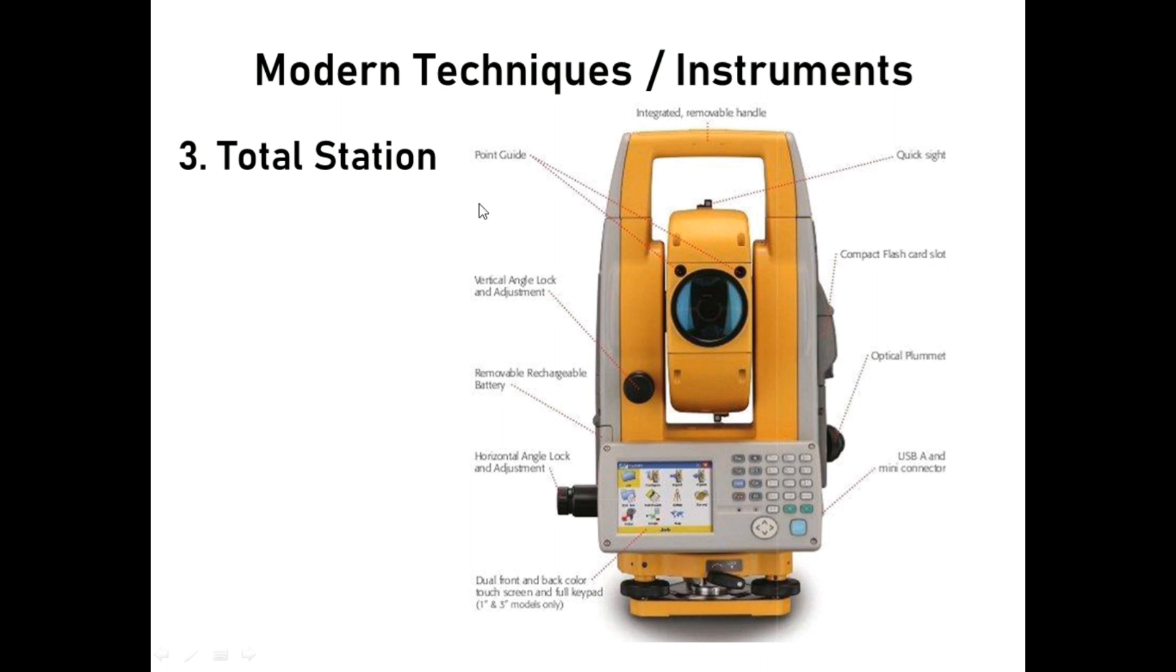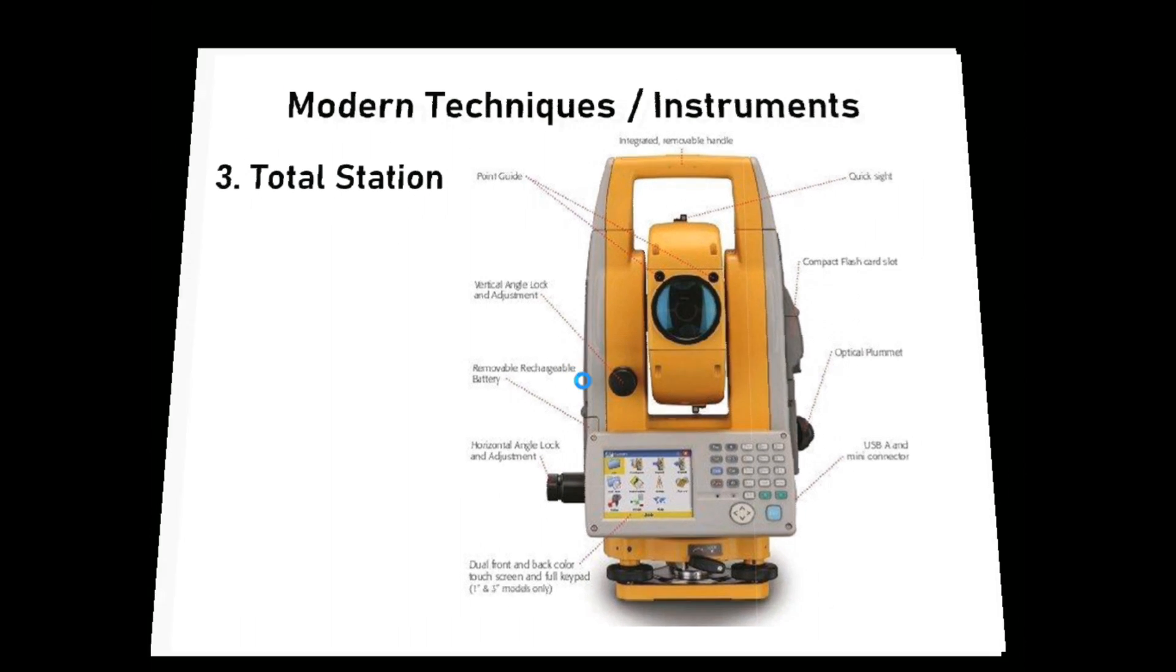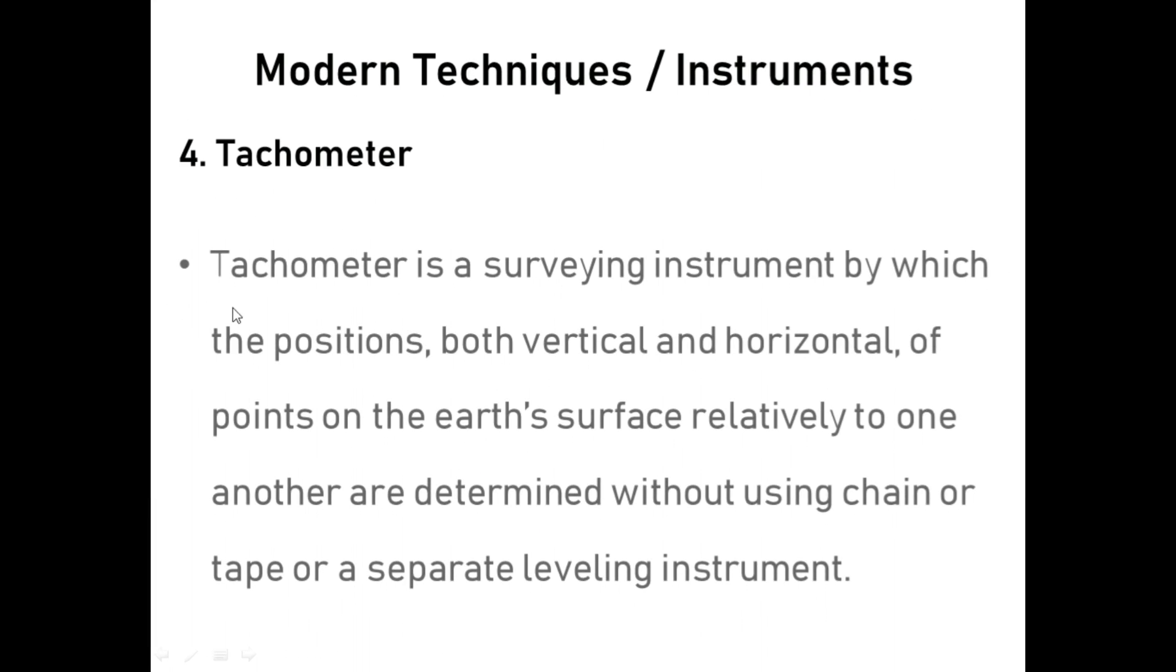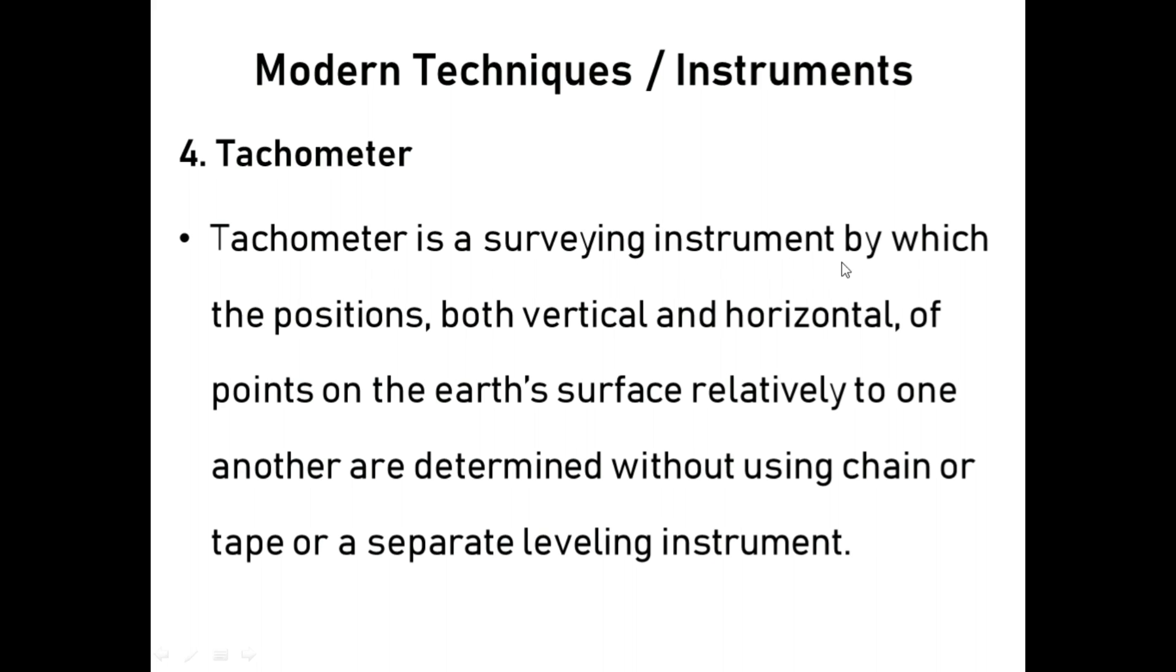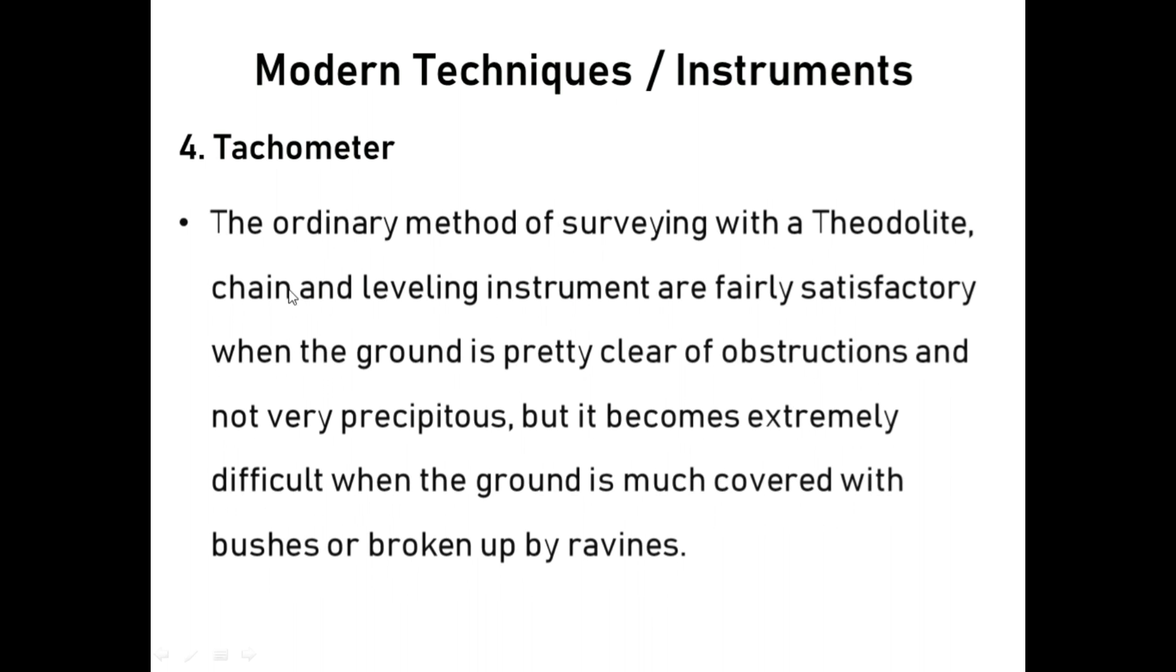In this slide you can see the components of total station. Tachymeter - tachymeter is a surveying instrument by which the positions, both vertical and horizontal, of points on the earth surface relatively to one another are determined without using chain or tape or separate leveling instrument.